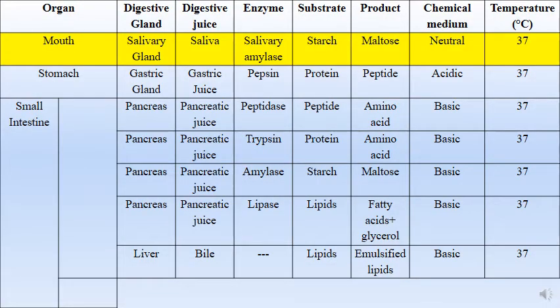Now let's move to this table, which is very important. We have digestive glands, organs, digestive juices, enzymes, substrate, product, medium, and temperature. As you notice, all the temperatures are 37 degrees Celsius — that is the normal body temperature, and it is the optimum temperature, meaning the best temperature at which enzymes can act.